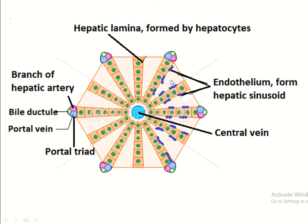From the hepatic sinusoid, blood flows to the central vein, then to the sublobular vein, then to the hepatic vein, and finally to the inferior vena cava.